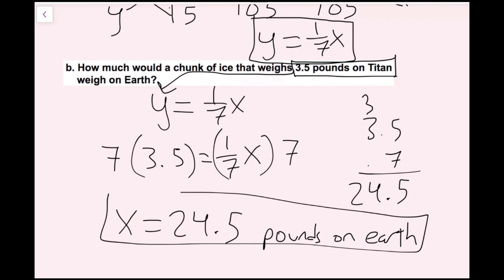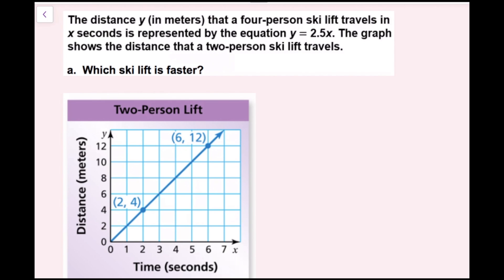The distance y in meters that a four-person ski lift travels in x seconds is represented by the equation y equals 2.5x. The graph shows the distance that a two-person ski lift travels. To find the speed of the four-person ski lift, I'm going to look at my equation in the form y equals mx, which means I have a proportional relationship, and m is the slope.